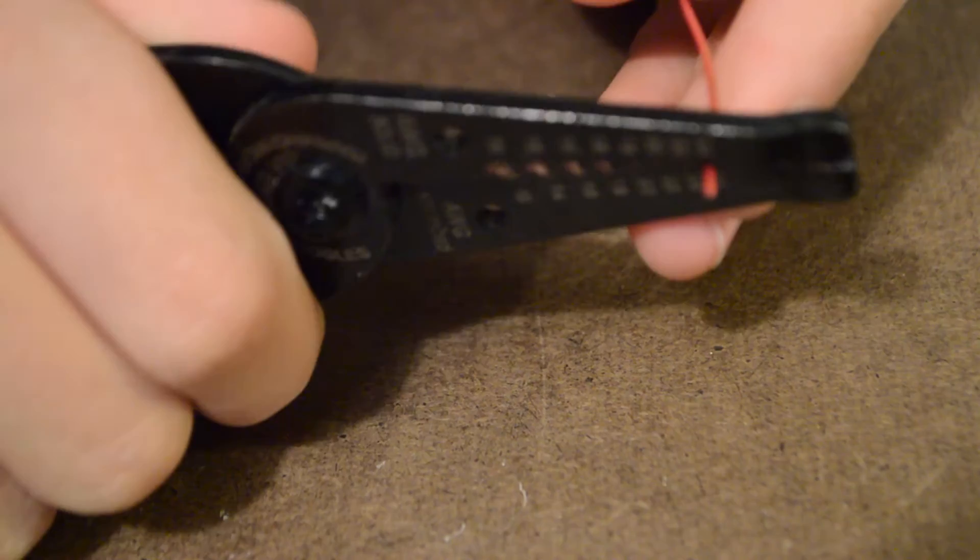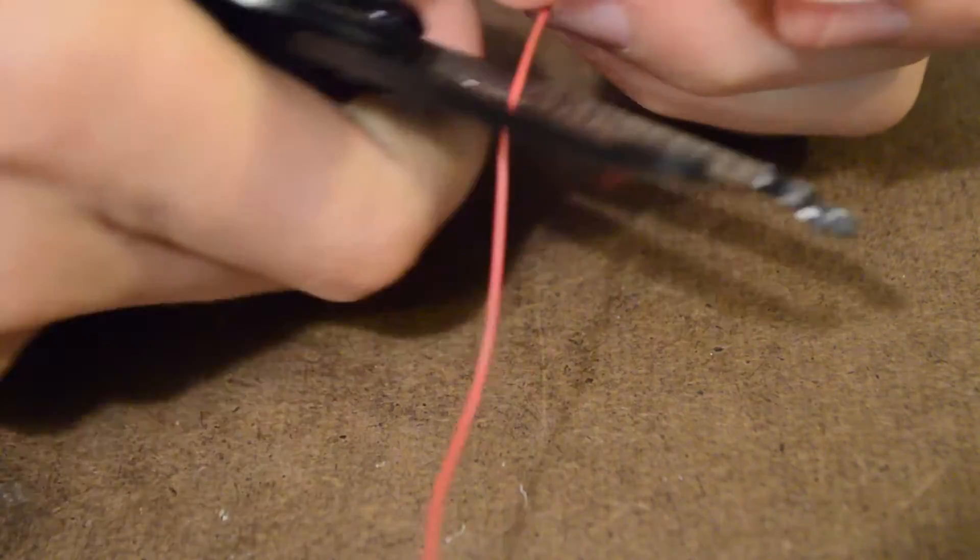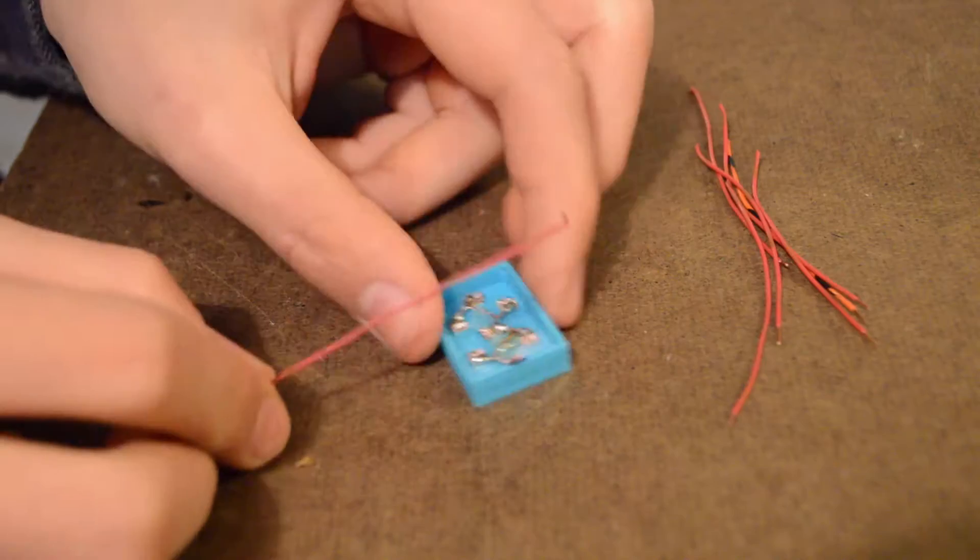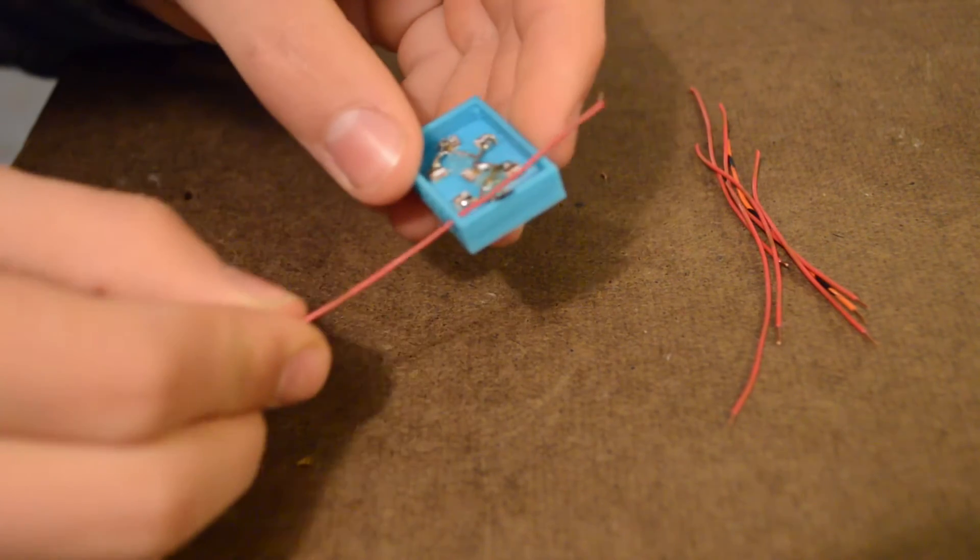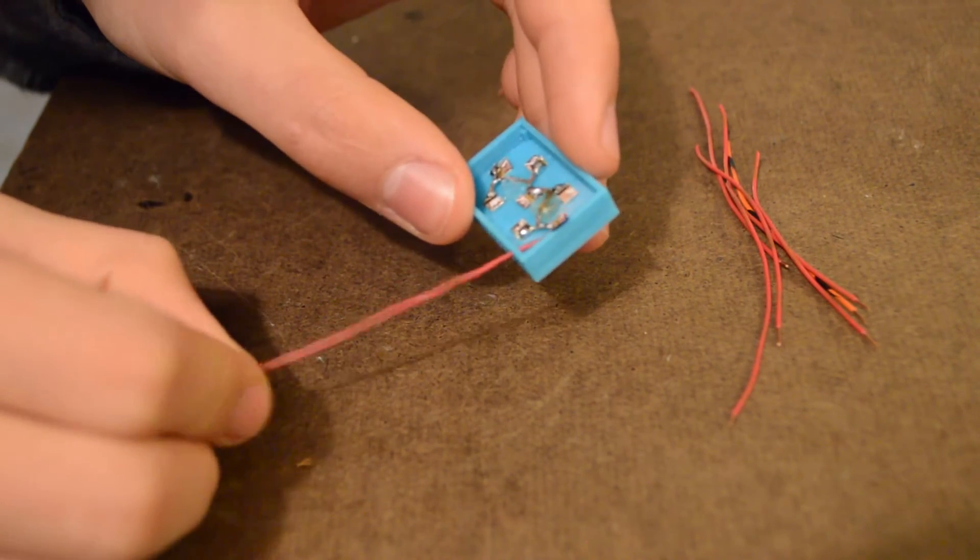Now cut 8 lengths of wire about 3-4 inches long as shown in the video and strip one end. Now feed each wire through its correct hole, secure it with a bit of hot glue and solder in place.